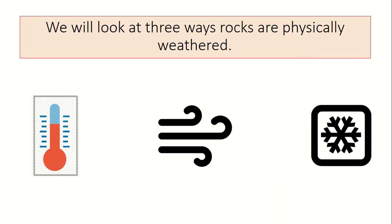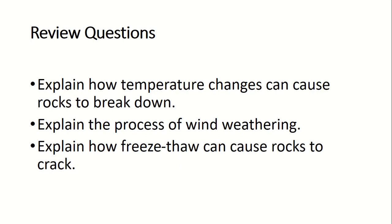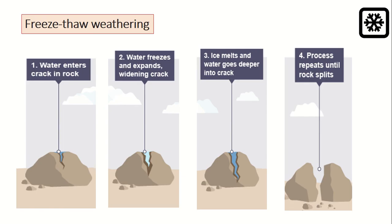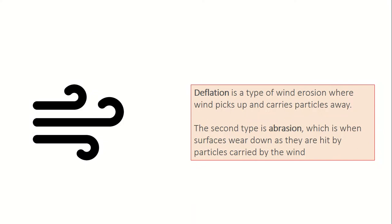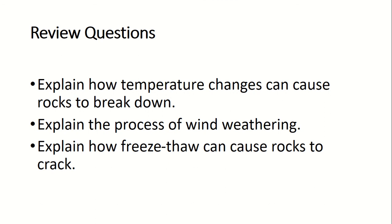So to summarise, those are three ways rocks are physically weathered: temperature changes from hot and cold, wind forming different landforms through deflation and abrasion, and the impact of freeze-thaw weathering. To finish off, there are three review questions. I would like you to answer and upload these onto Satchel 1. Please write them in your own words and in full sentences. You are free to rewind or re-watch parts of this video — for example, go back to explain how freeze-thaw weathering happens, or revisit the images to talk about wind weathering. If you have any questions, a Zoom link will be provided, or you can leave comments on Satchel 1.